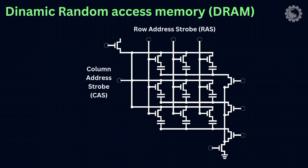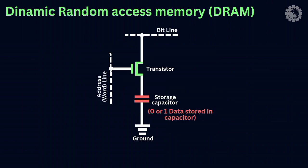To read data from a DRAM cell, the computer sends a signal to the transistor, which turns it on. This allows the electrical charge in the capacitor to flow through the transistor and be detected by the computer.